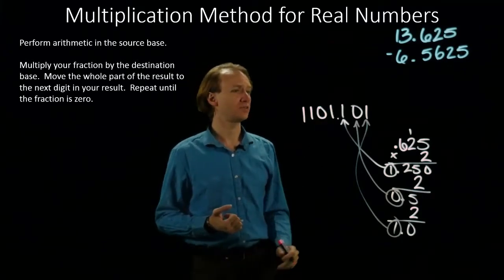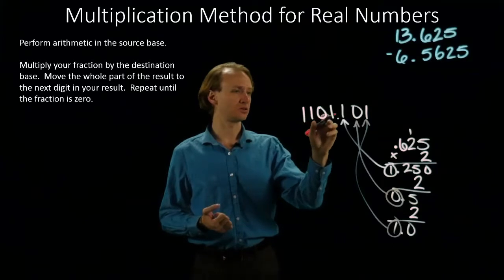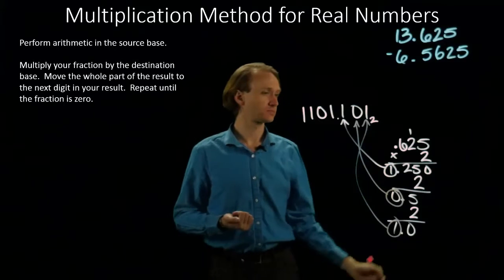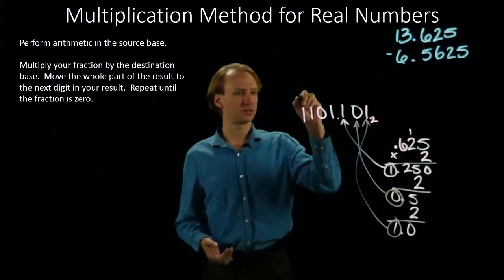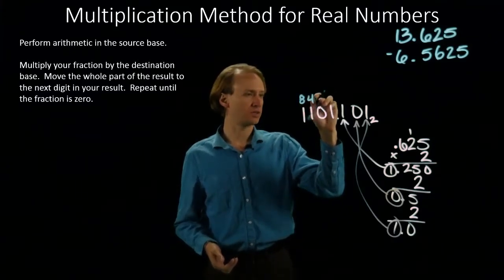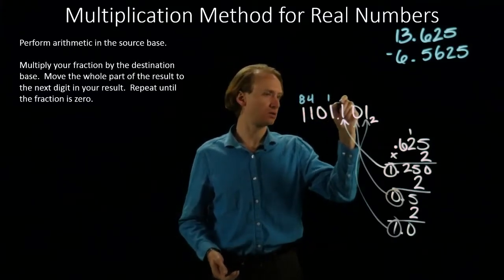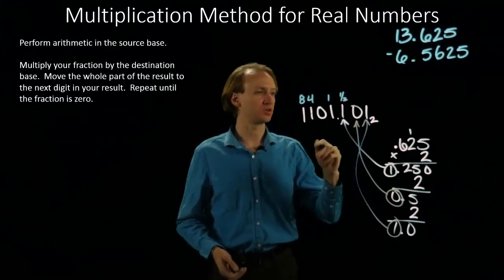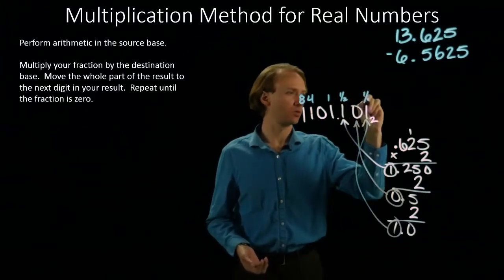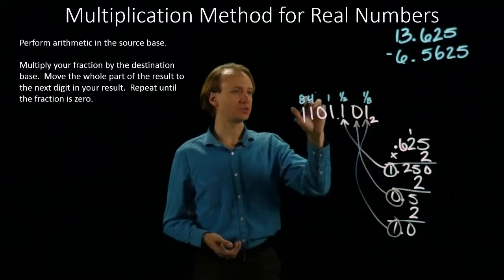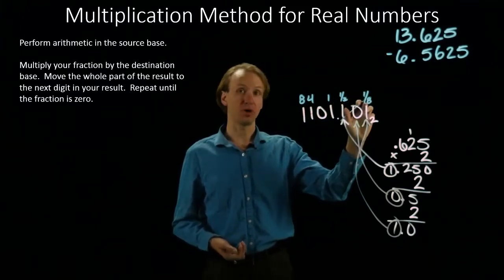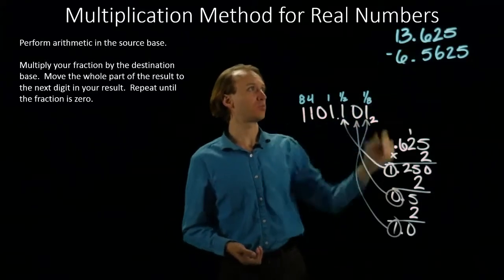13.625 is 1101.101 in binary. So, if you'd like to confirm this, you can see that this is 8 plus 4. I don't have any 2's. I have a 1. This is 1 half, 2 to the minus first. 2 to the minus second would be 1 fourth. This is 1 eighth. So, 8 plus 4 plus 1 is 13. 0.5 plus 0.125 gives me 0.625.